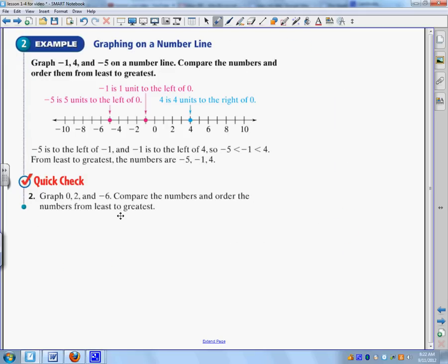Alright, graphing on a number line. So it gives you three numbers. Graph negative 1, 4, and negative 5 on a number line. Compare the numbers and order them from least to greatest. So, compare the numbers. So first I'm going to graph them. So they graphed it. There's negative 5, there's negative 1, and here's 4.